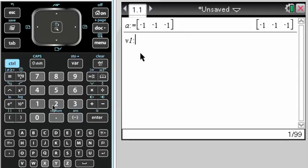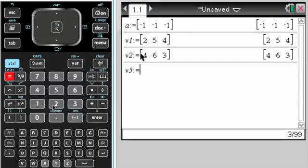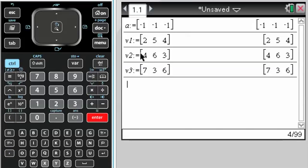And then V1 is [2, 5, 4]. And then V2 is [4, 6, 3]. And V3 is [7, 3, 6]. So I get that.